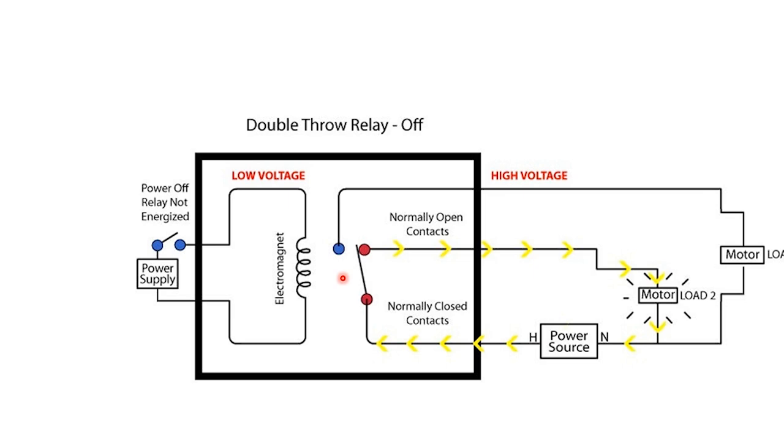Let's look at how a double throw relay actually works. In this scenario, we have the double throw relay wired to two separate circuits, as you can see here.